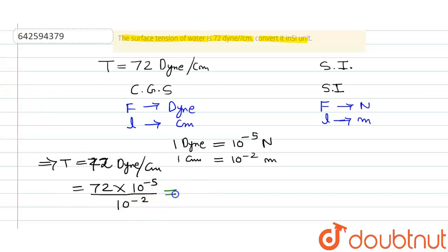So we got tension in terms of SI units which is 0.072 newton per meter. This will be our final answer.